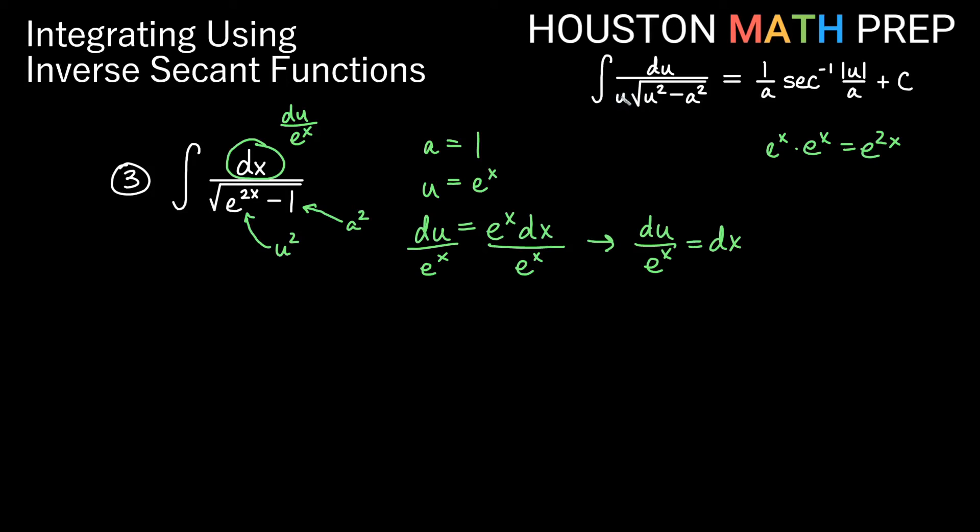So if I think about this 1 over e to the x that I have, what I really am going to do is bump this e to the x down here, and then that's the extra u that I need for the definition here. So then this actually becomes just du. That e to the x actually makes the u that we desperately needed on the outside.